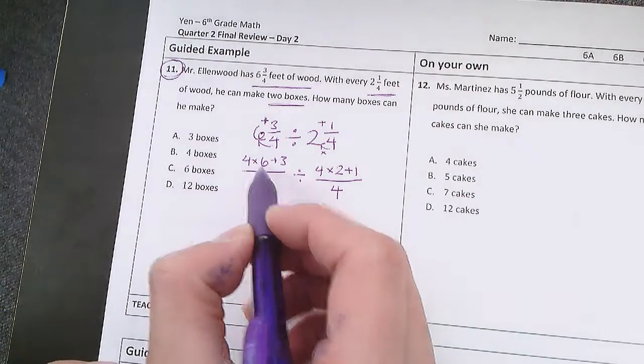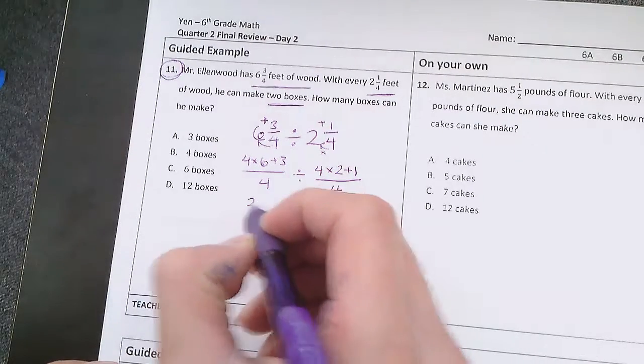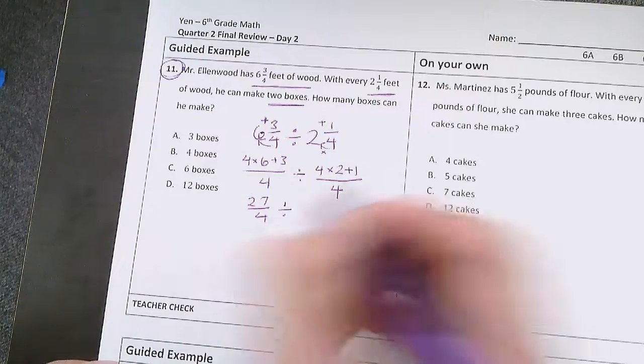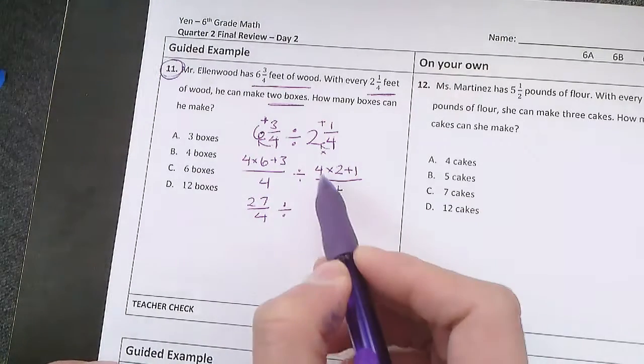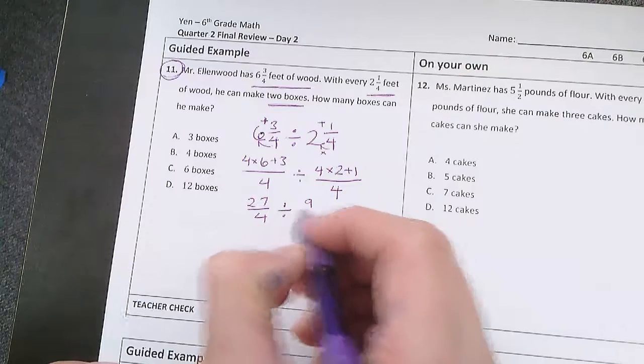And 4 times 6 is 24 plus 3 which is 27. So we have 27/4 divided by 4 times 2 is 8 plus 1 which is 9. 9/4.